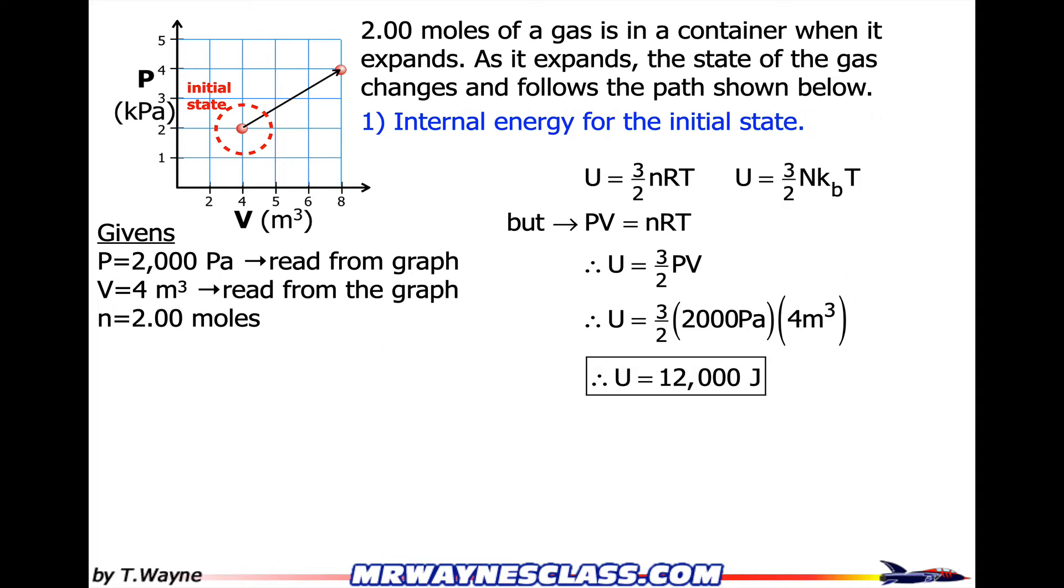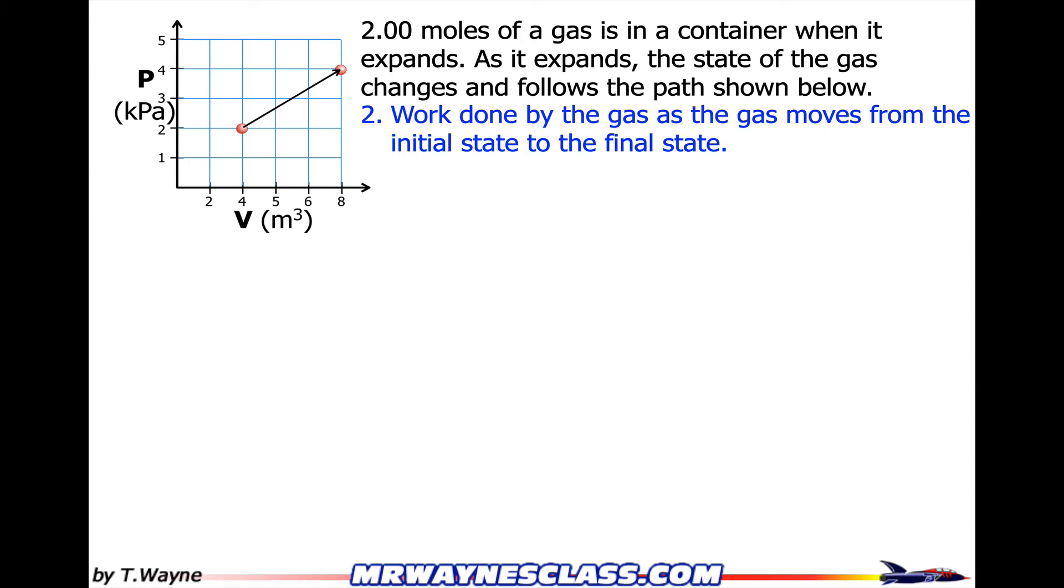Let's look at question number 2. Number 2 says, calculate the work done by the gas as the gas moves from the initial state to the final state. All right, so the final state, if the initial state's in the lower left and that's where the arrow starts, the final state is in the upper right-hand corner. So the work is defined as the area under the curve.